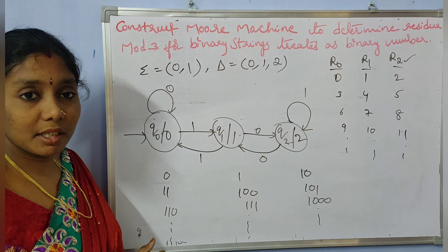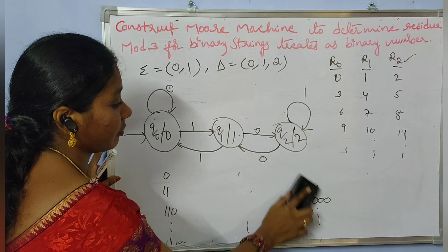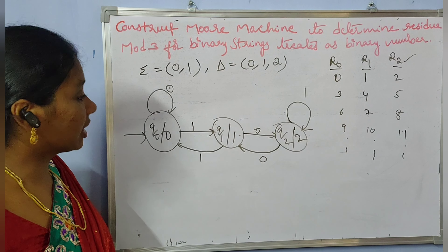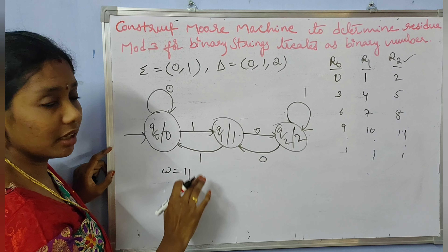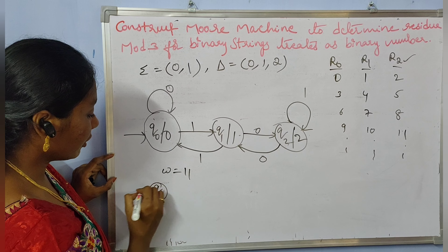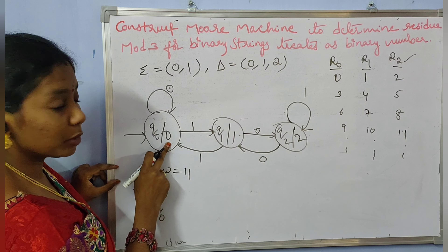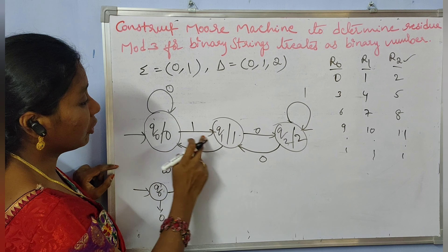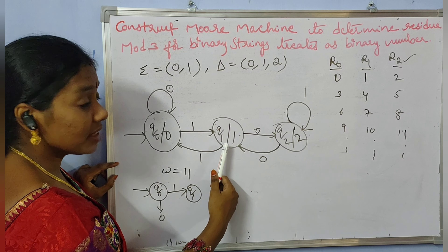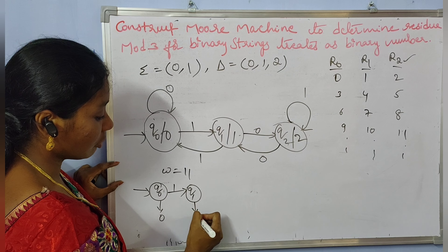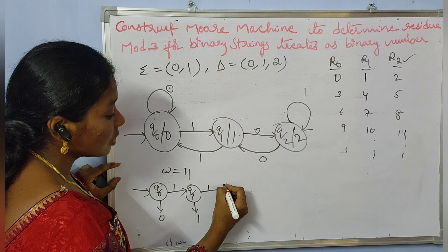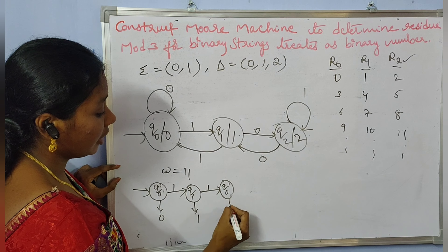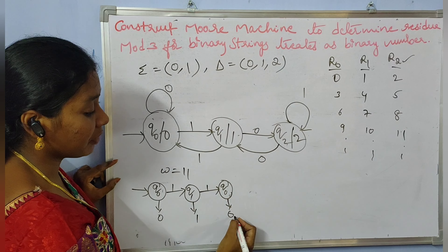Let us verify this. Take string W = '11', which is 3 in decimal, so it is divisible by 3. Starting at Q0 with output 0, we read '1' and move to Q1 with output 1. Then we read the next '1' and move from Q1 back to Q0. The output at Q0 is 0. So after processing '11', the final output is 0, meaning the string is divisible by 3.